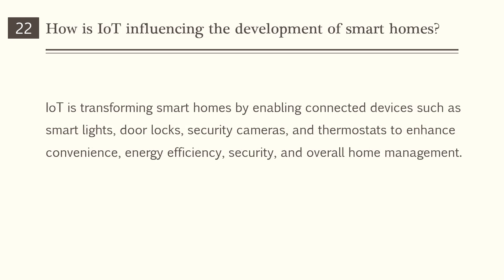How is IoT influencing the development of smart homes? IoT is transforming smart homes by enabling connected devices such as smart lights, door locks, security cameras, and thermostats to enhance convenience, energy efficiency, security, and overall home management.